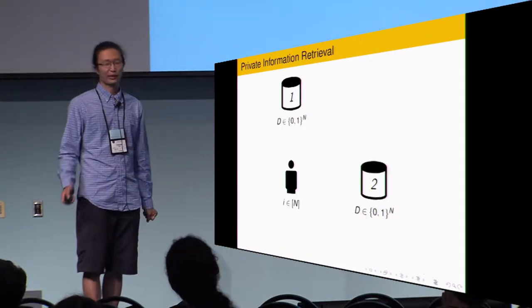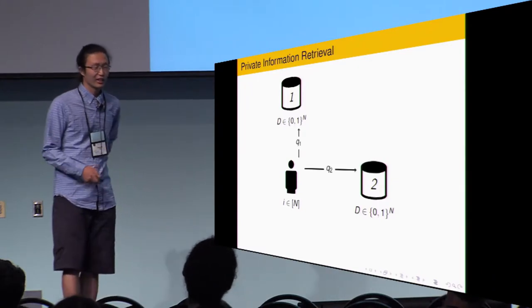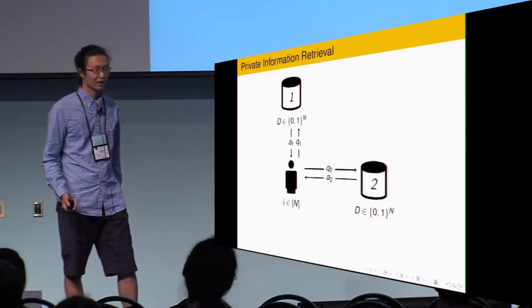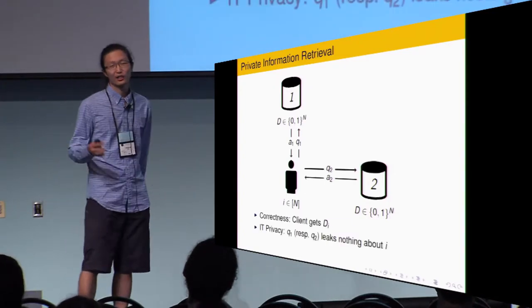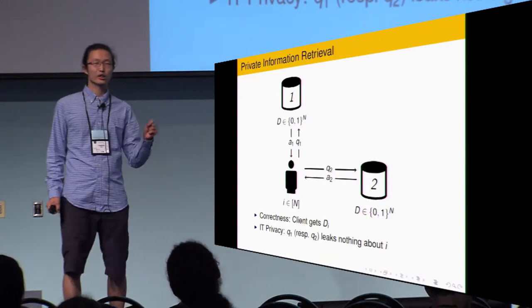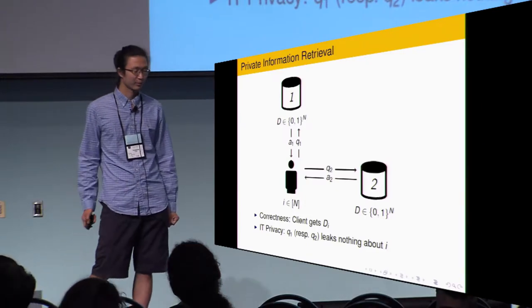Let's see. First, a quick definition of PIR. Two-server, a client. A client knows the index. Client generates query and sends to the server. Server answers. Client gets answers. And the client learns the S entry. For privacy, each server individually learns nothing about the index.